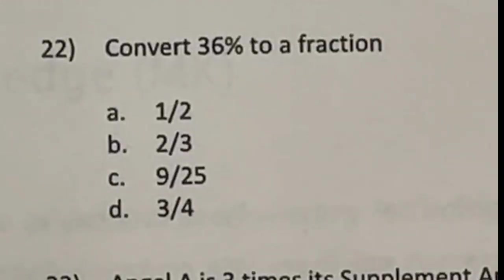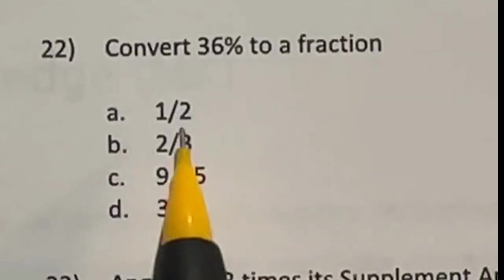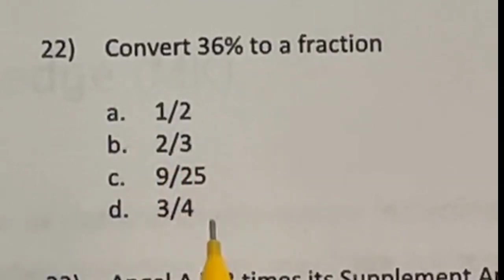So they want us to convert 36% to a fraction. Well, two ways of doing this. One is recognizing which of these is definitely the answer because the others are not. Some common fractions here. One half is 50%, two thirds is going to be 66.6 repeated, and three fourths is 75%. A lot of people know those three.